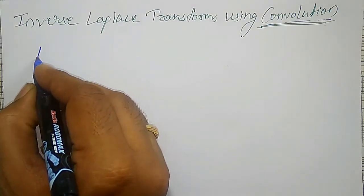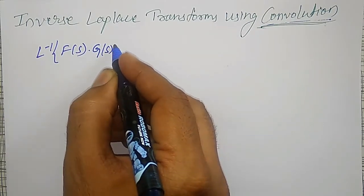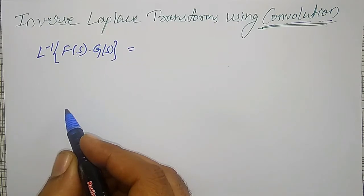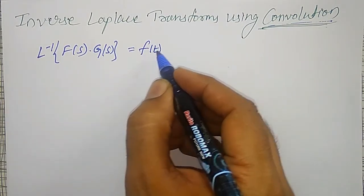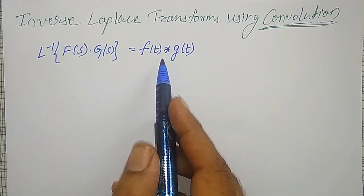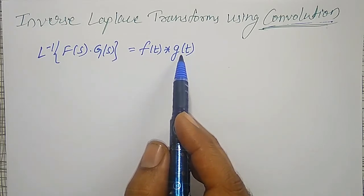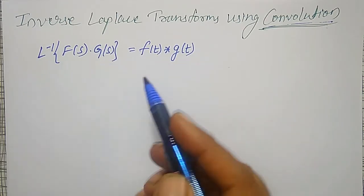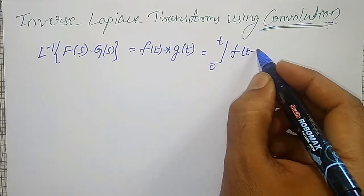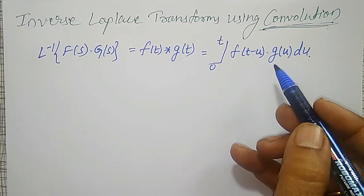The inverse Laplace transform of F(s) times G(s) — if a product of two functions is there — is given by f(t) asterisk g(t), where asterisk denotes convolution. Here, f(t) is the inverse Laplace transform of F(s), and g(t) is the inverse Laplace transform of G(s). This convolution is defined as the integration from 0 to t of f(t − u) times g(u) du. Using this, let me solve the example.